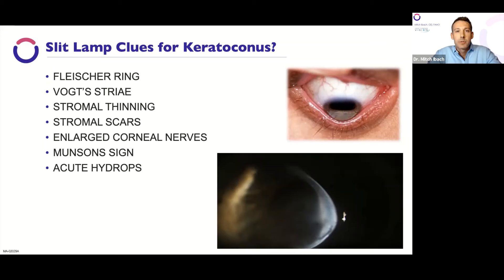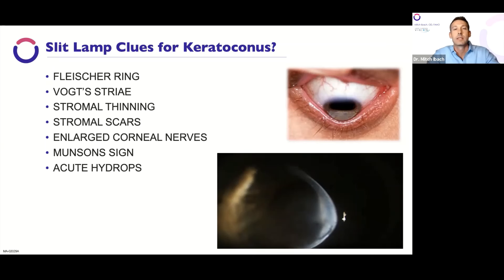And then acute corneal hydrops — remember, hydrops is a break in Descemet's membrane. When that happens, there's a fluid rush: aqueous rushes into the cornea, causing corneal edema. The patient's vision drops off really quickly. Over time the edema clears, but it leaves behind a big resultant scar.